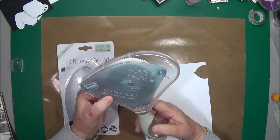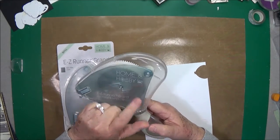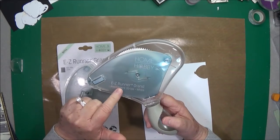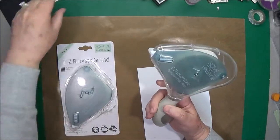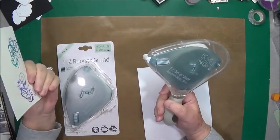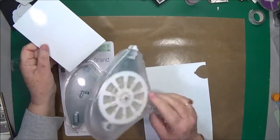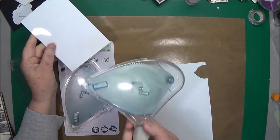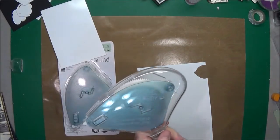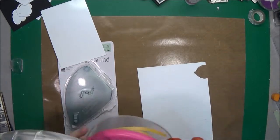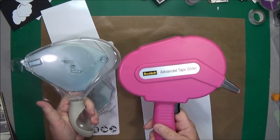It is by 3L and it is the Easy Runner Grand permanent strip adhesive, and it's not very heavy at all. That's the first thing I liked about it. It's not heavy.